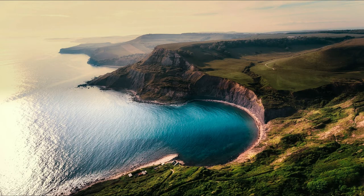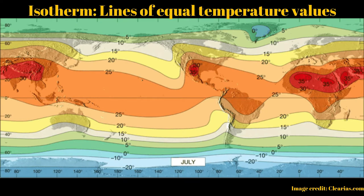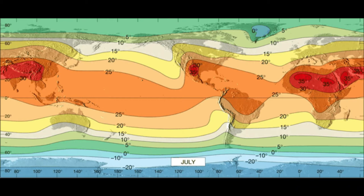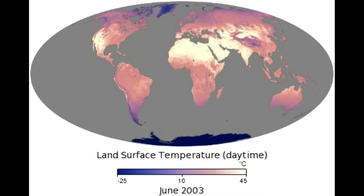Proximity to oceans also determines temperature ranges — it lowers the range. If we took Earth's temperatures and put them on a map, an isotherm is a line that shows equal temperature values. You see them on weather maps a lot. Their trend is that they are east-west oriented, with decreasing values toward the poles. The changes between the lines are smaller toward the equator, and they shift south to north from January to July.